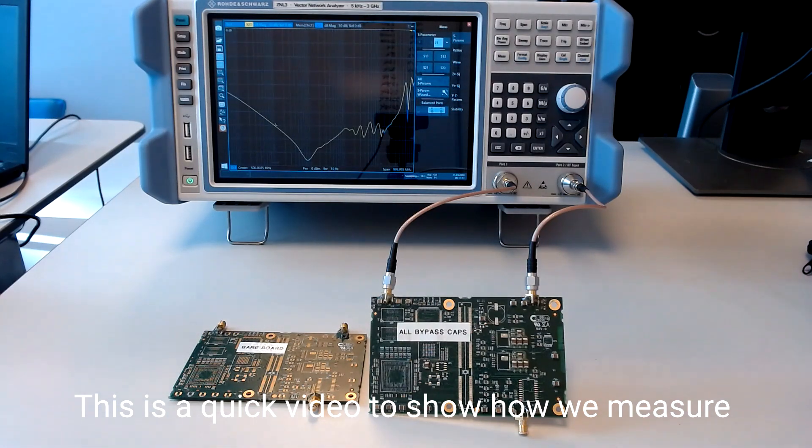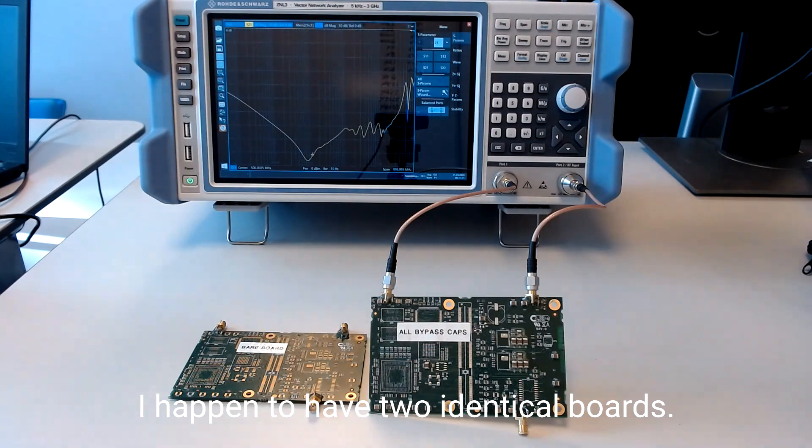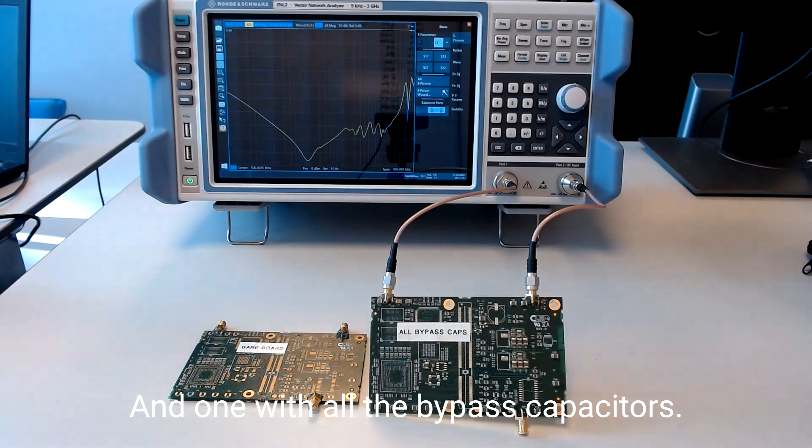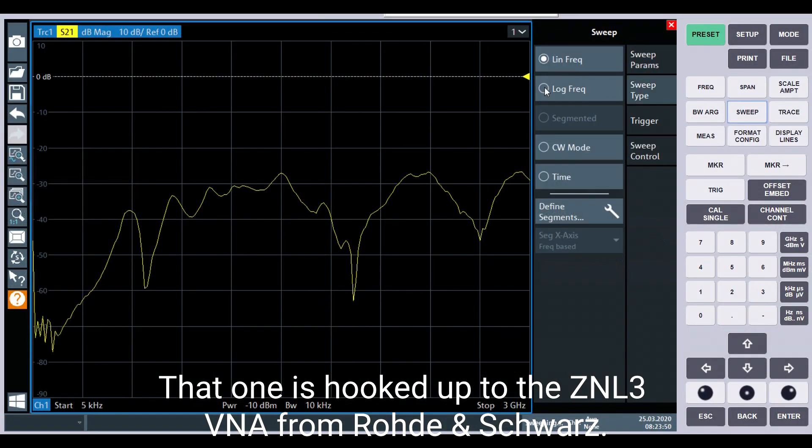This is a quick video to show you how we measure the impedance of the bypass capacitors on the board. I happen to have two identical boards, one bare board and one with all the bypass capacitors. That one is hooked up to the ZNL3 VNA from Rohde & Schwarz.